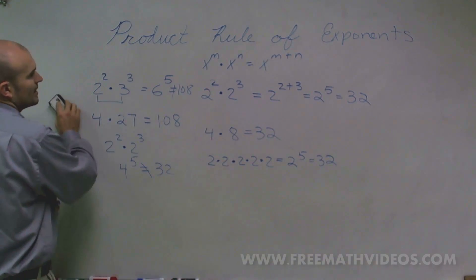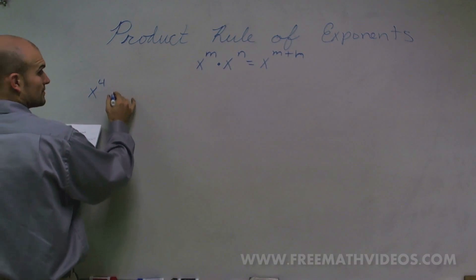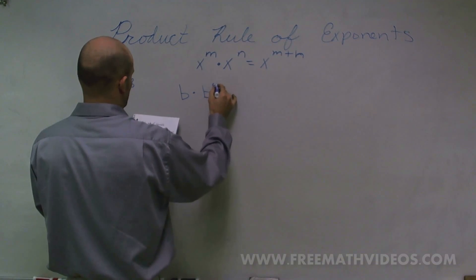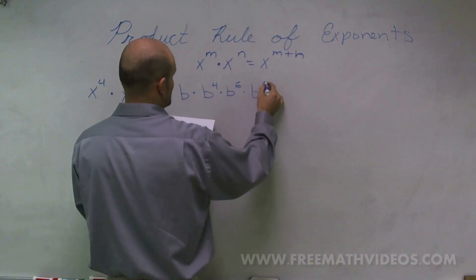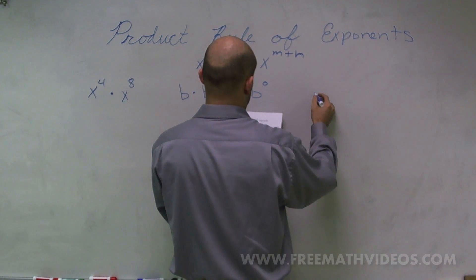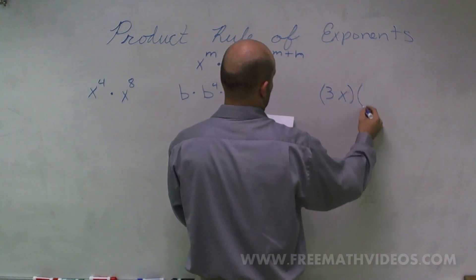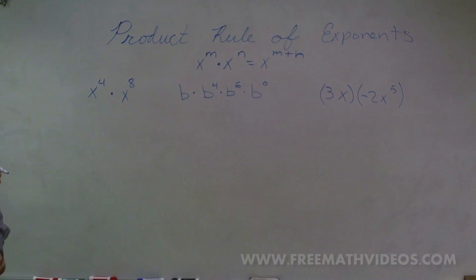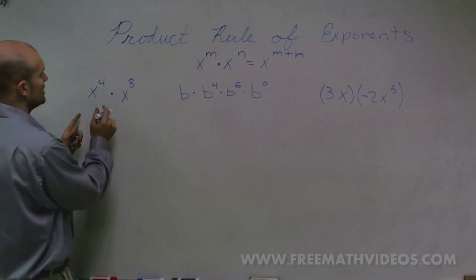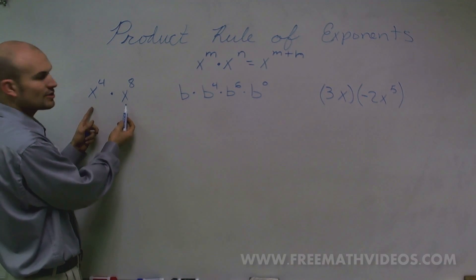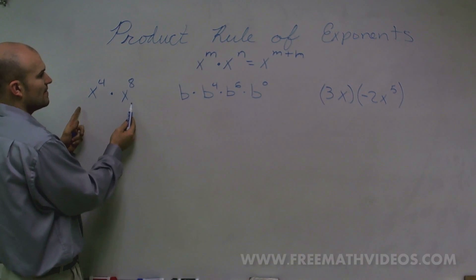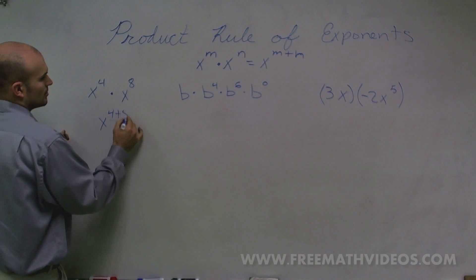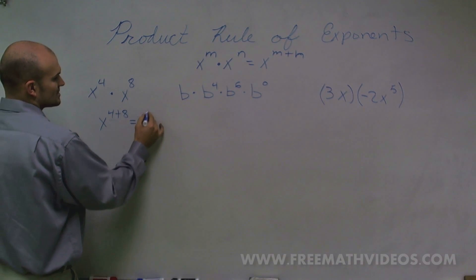So let's take a look at a couple problems and work through them. If I work through x to the 4th times x to the 8th, I have my two bases exactly the same, so therefore I can use the product rule of exponents. All I need to simply do is just add my exponents. So this one is going to be x to the 4 plus 8, which is going to equal x to the 12th power.